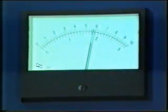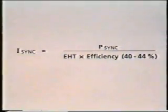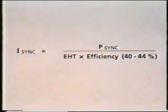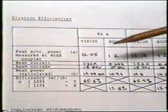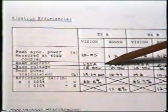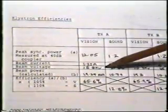Use the mod anode tap to set the peak sink current, recalculating the DC input power and checking that 40-46% efficiency will be achieved. Reset the collector current as necessary. Whenever possible, reset the EHT to the voltage used on acceptance.